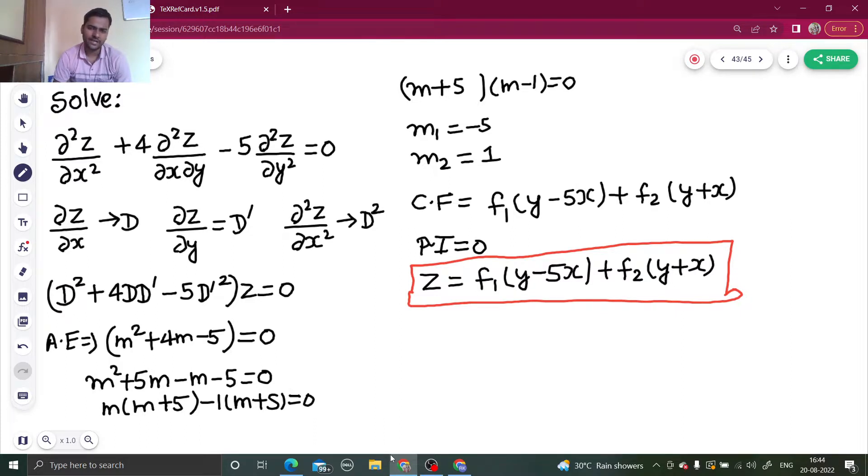Get the values of m₁ and m₂, write your complementary function. In this case, particular integral is 0, so you don't need to worry. Just write z = CF + PI as your final answer. So I hope you learned something from this. Do watch my partial differential equation playlist where you will get to learn so much concept through questions only. That's it from my side, thanks and have a nice day!